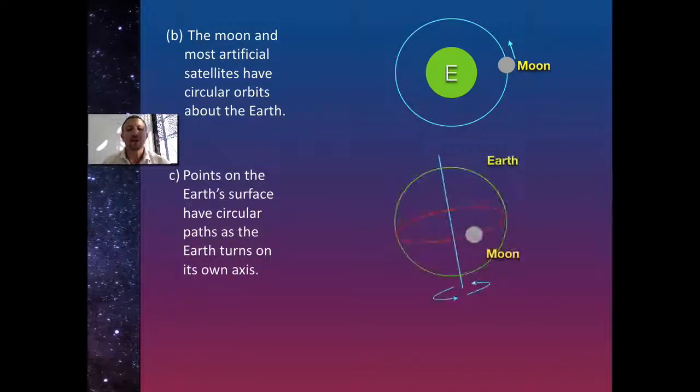Then we've also got the idea that on the earth, points on the earth's surface also will have a circular path. So if you take any point on the earth, like Australia, if we look at it on the earth and we follow its motion, it's going to be going in a circle.